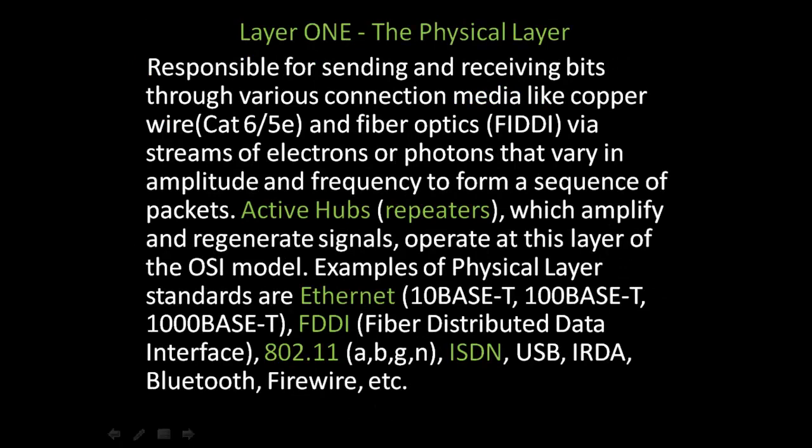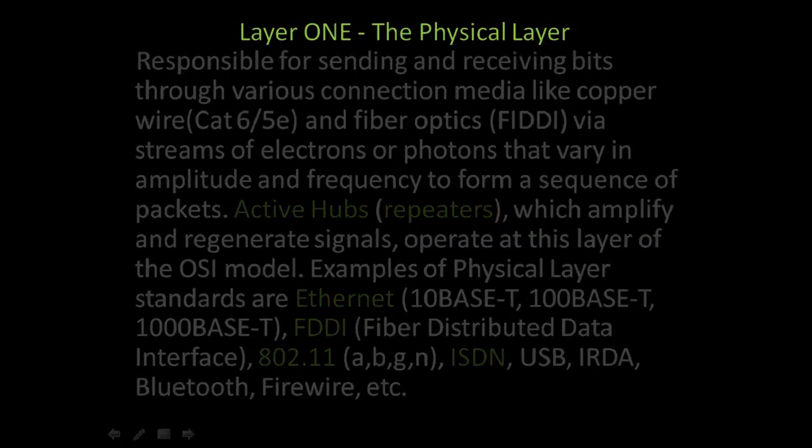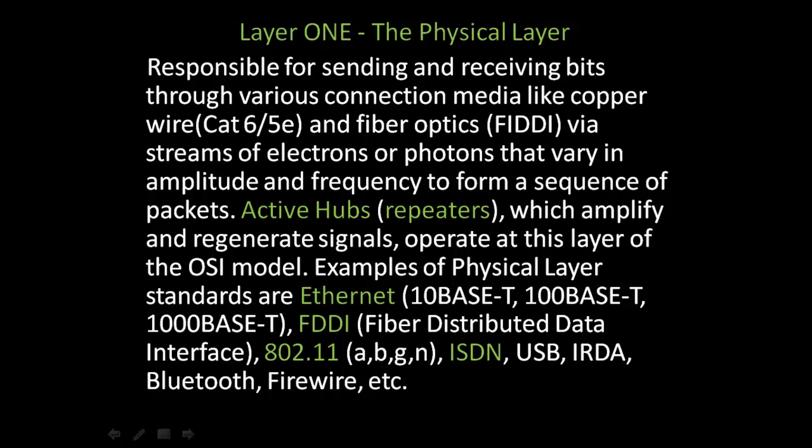Layer 1 is the physical layer. This layer is responsible for sending and receiving bits through various connection media like copperware — such as Category 6 and 5e — and fiber optics, via streams of electrons or photons that vary in amplitude and frequency to form a sequence of packets. Active hubs, or repeaters, which amplify and regenerate signals, operate at this layer.